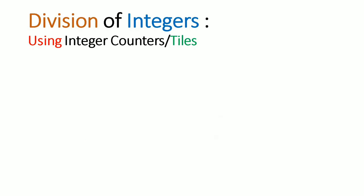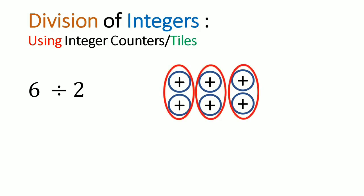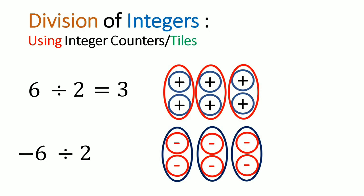Let us now turn our attention to the division of integers. If I had 6 divided by 2, I put 6 positive integer counters and group them in sets of 2s. We see that we have 3 groups of 2s, so 6 divided by 2 equals 3. But suppose if we had negative 6 divided by 2 — I would have 6 negative counters, divided into groups of 2s. I still have 3 sets, however they are 3 sets of negatives. So negative 6 divided by 2 gives negative 3.